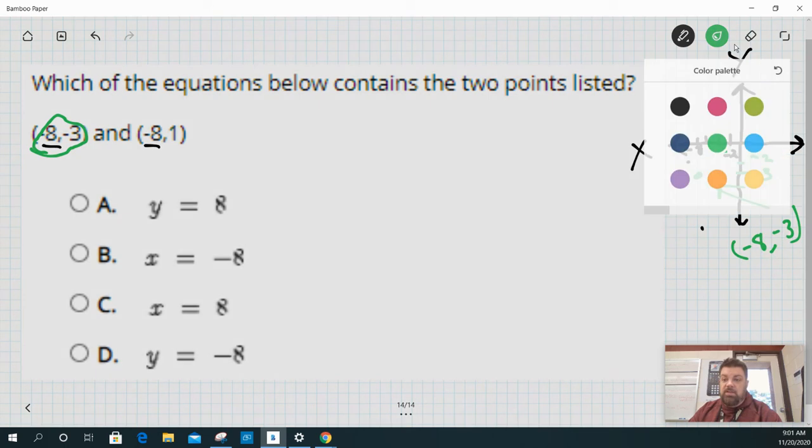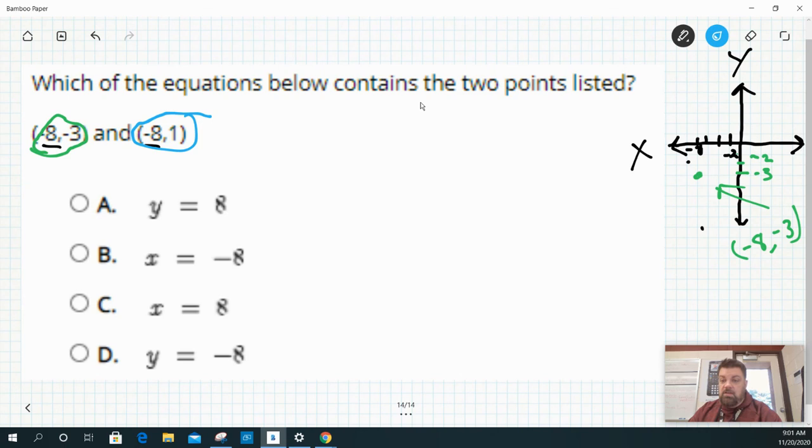Then the next point I'm going to graph is (-8, 1). So I'm going to go over negative 8 and just up 1, right? So that's positive 1. That's the point (-8, 1).